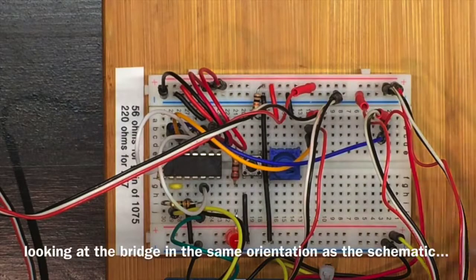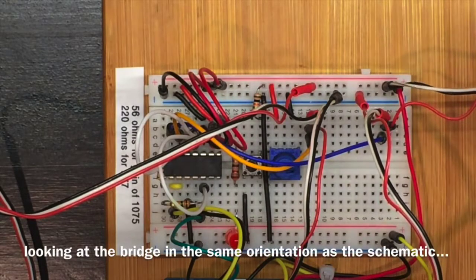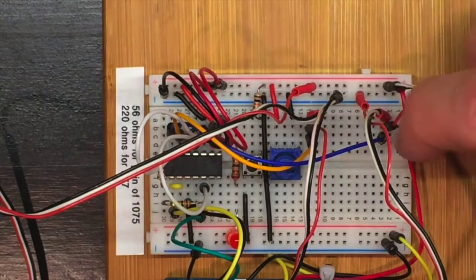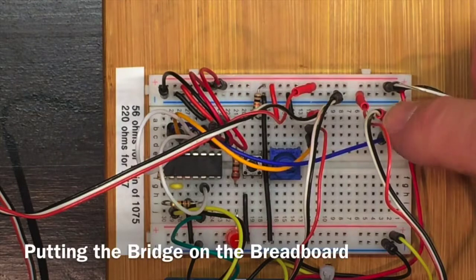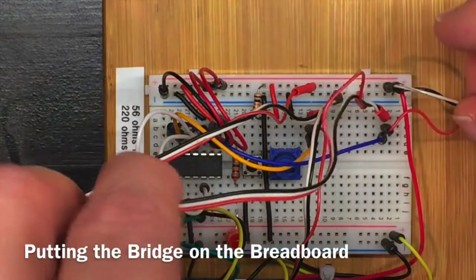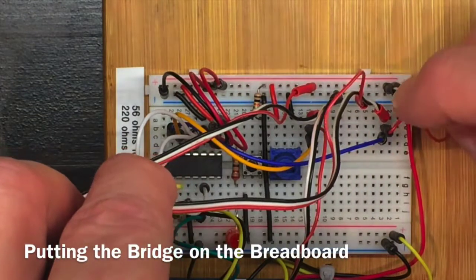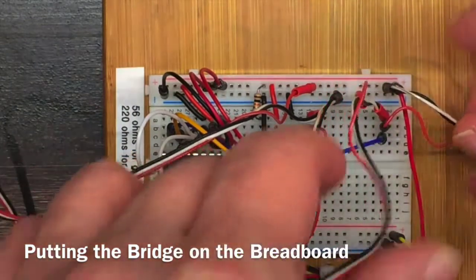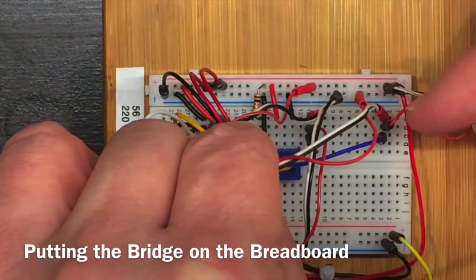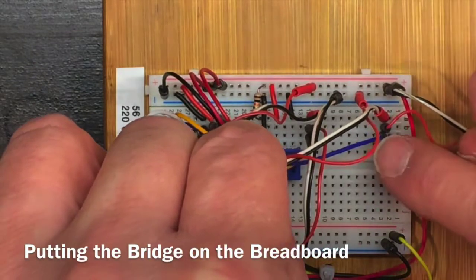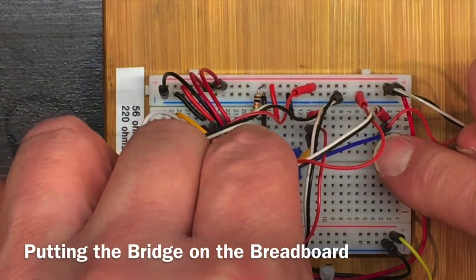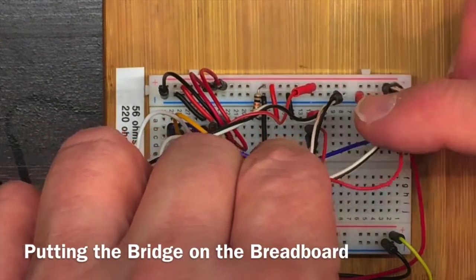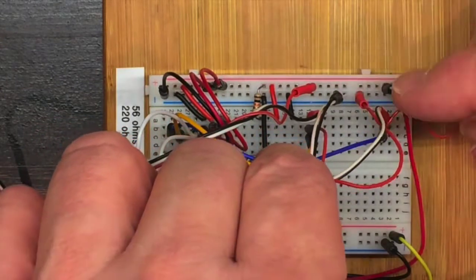I've hooked up the gauges to form a Wheatstone bridge. So this is one of the gauges that's on top and it's connected between positive and a point over here on the breadboard. This is one of the gauges from the bottom and it's connected between that point on the breadboard and negative. So between the two of them, they form a voltage divider and the voltage on this blue pin is about 2.5 volts because these resistances, these strain gauges, are about equal.